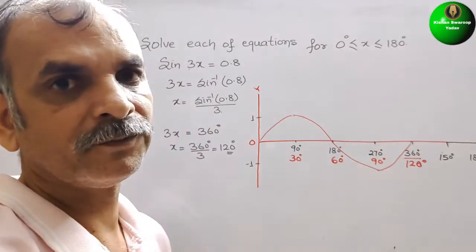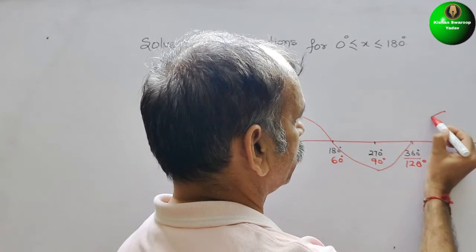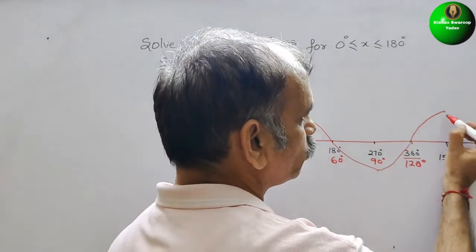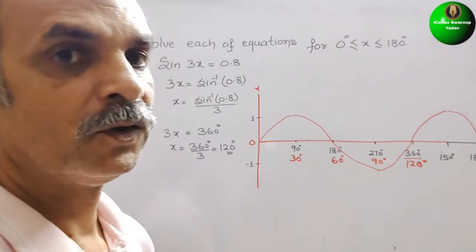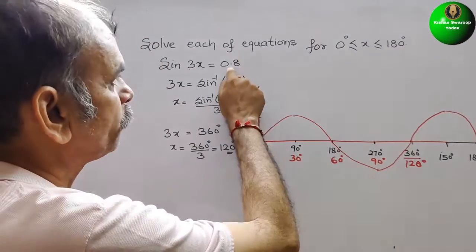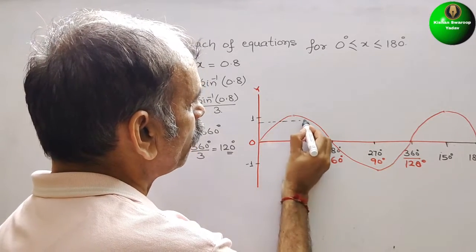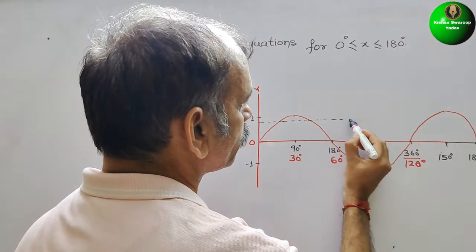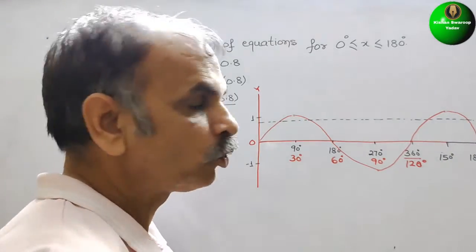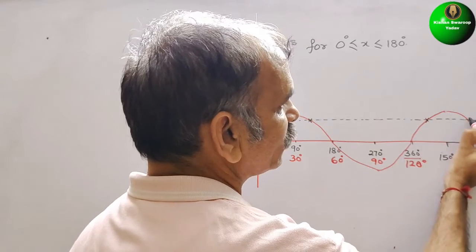Now continuing the graph — at 120° it comes to the top again, and from there it goes back to 0. Next, we have to draw a horizontal line at 0.8. They have given 0.8, so this is the line at 0.8. From this, we get four solutions: first solution, second solution, third solution, and fourth solution.